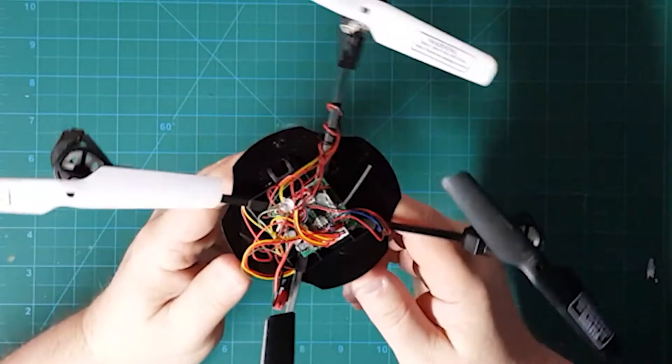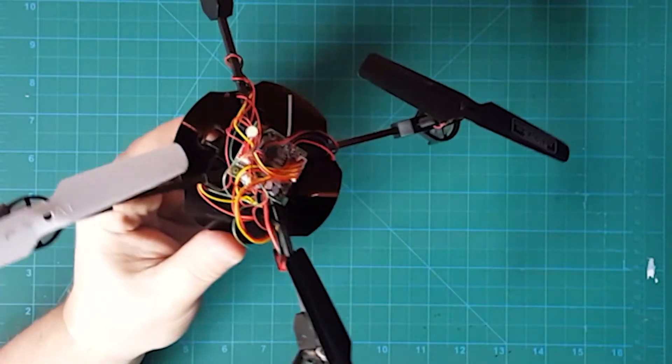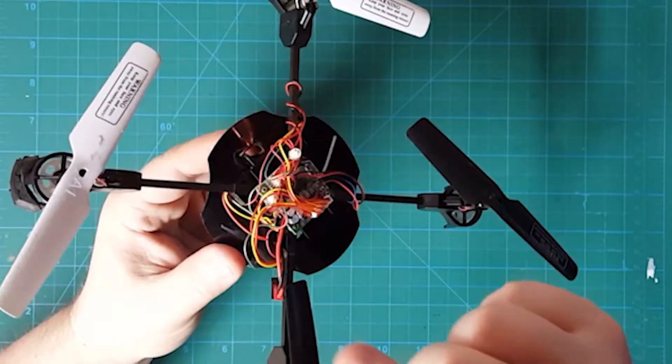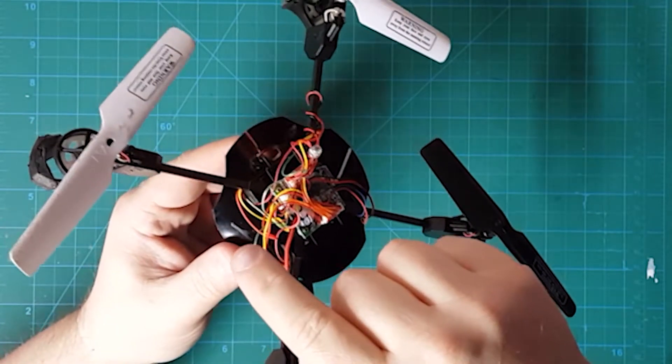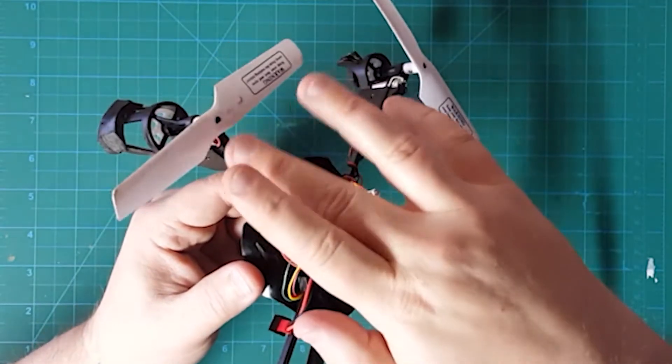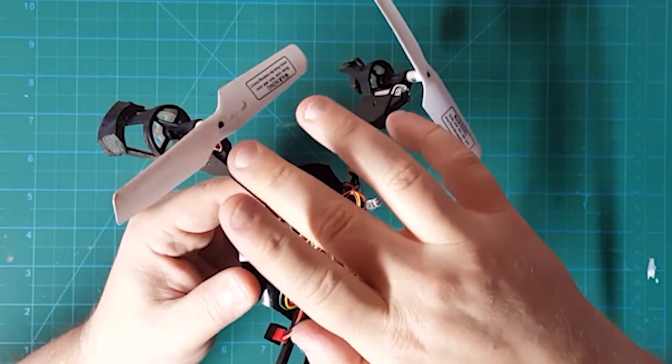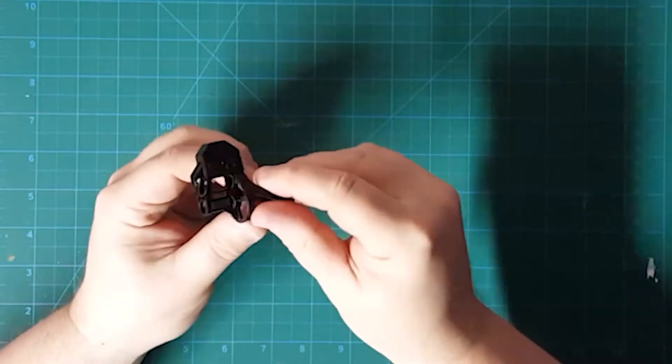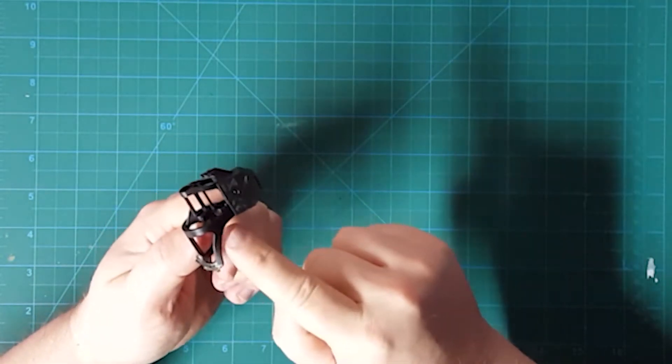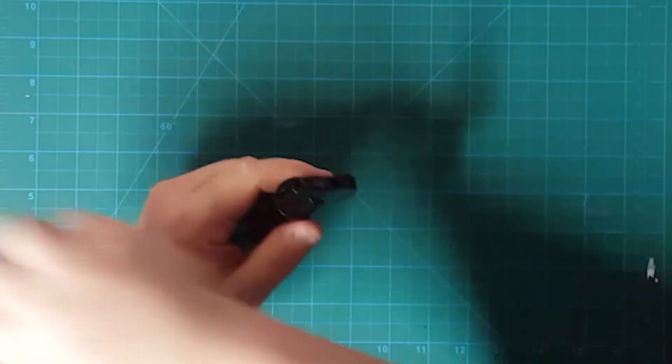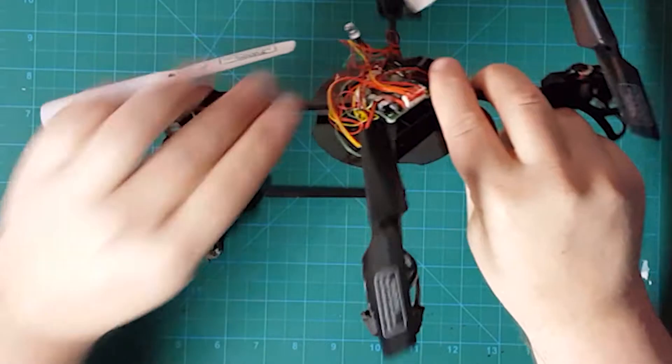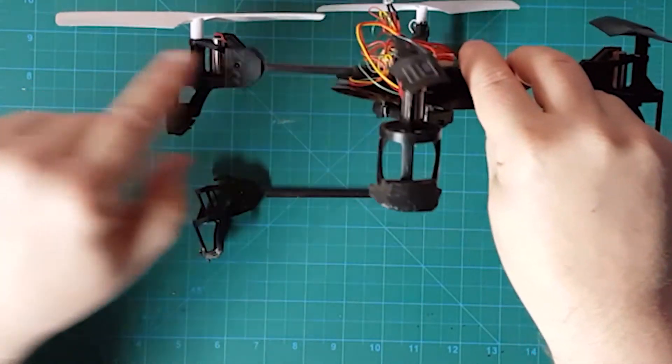So this is my UDI quadcopter. I already replaced one of the arms because I had a motor failing on me. So a lot of people have been asking about replacing just the motor. I'm going to use my old arm assembly to show you what it takes to replace just a motor. You have this cage housing here that holds the propeller shaft and the motor and that's connected to the arm. That's basically this section here.